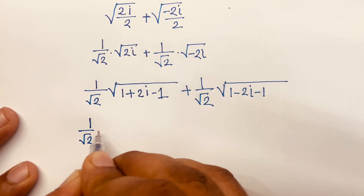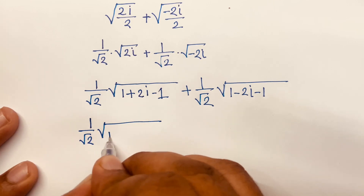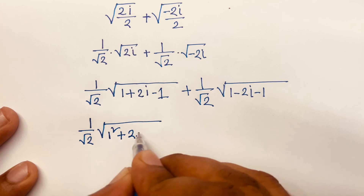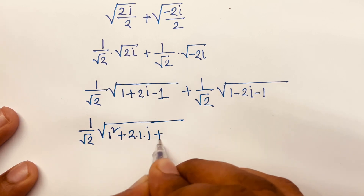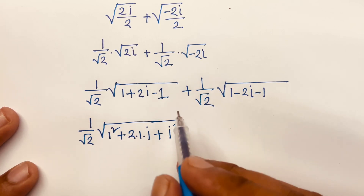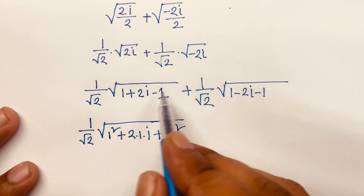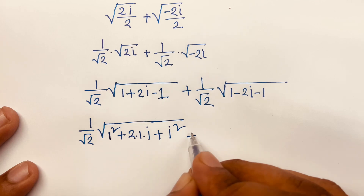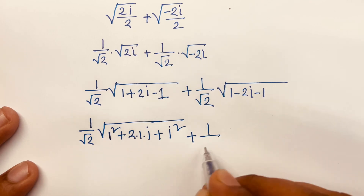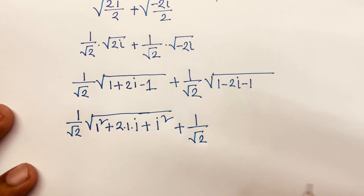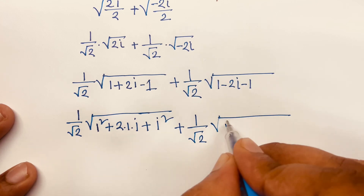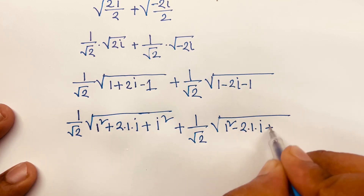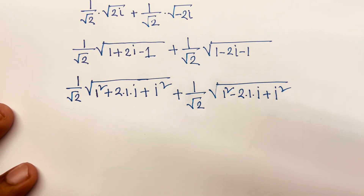Now we rewrite each term: 1/√2 · √(1² + 2·1·i + i²) plus 1/√2 · √(1² − 2·1·i + i²). Since we know i² = −1, we substitute i² = −1 into both expressions.